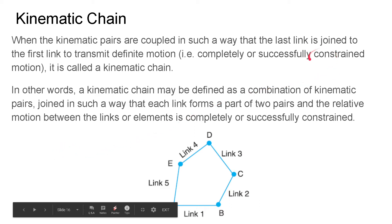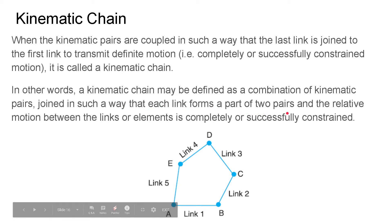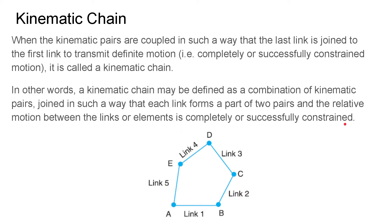In other words, a kinematic chain may be defined as a combination of kinematic pairs — these are binary links joined in such a way that each link forms a part of two pairs. The relative motion between the links or elements is completely or successfully constrained, with no incompletely constrained links. We limit ourselves to links which form a part of only two pairs.